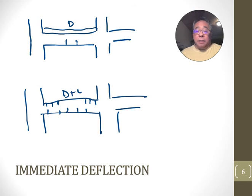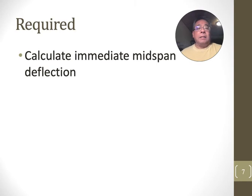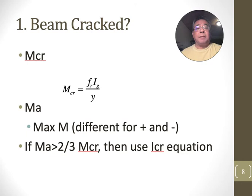We're going to calculate an I for dead load only, calculate the dead load deflection. Calculate a smaller I for dead plus live, and calculate the deflection for dead plus live. And in the end, the live load deflection will be dead plus live minus dead. And the reason we just can't go straight to live load deflection is because the moment of inertia is changing. We're going to calculate this immediate deflection at the mid-span. Before we start, we need to know, is the beam cracked or not?